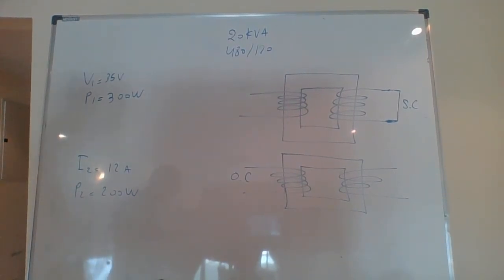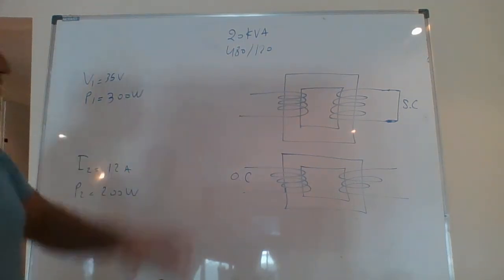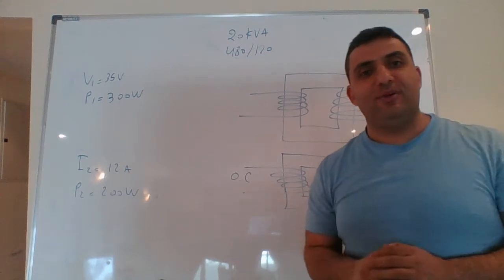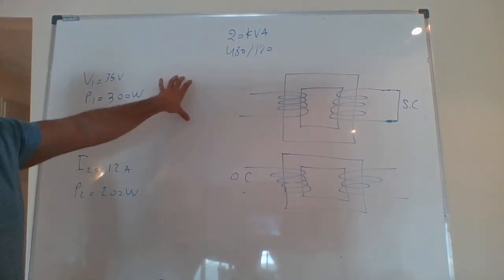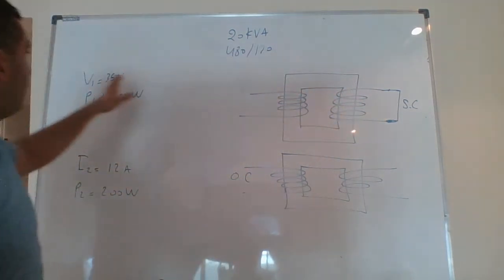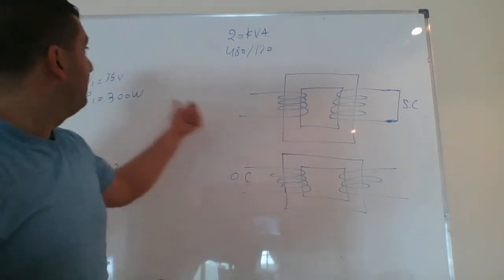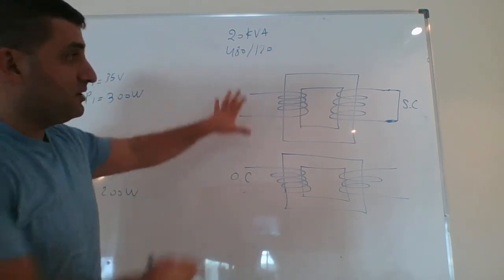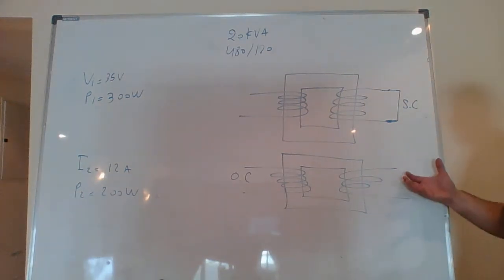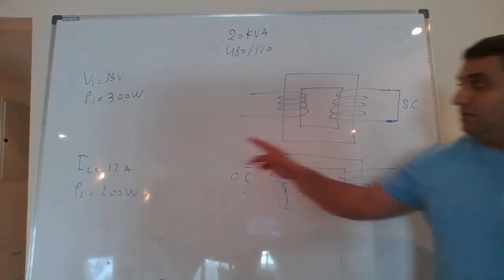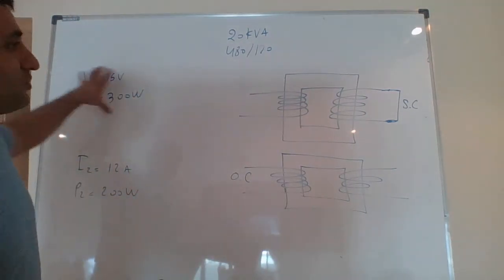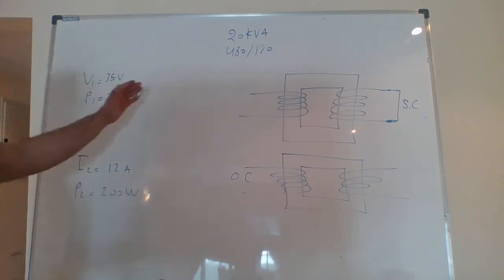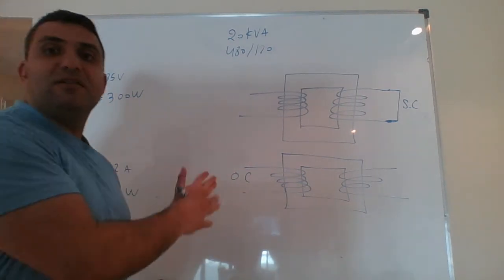The first question: from the short circuit test, determine the equivalent series impedance referred to winding one, neglecting the shunt admittance. I applied rated voltage, short-circuited the secondary, and measured V1 and P1. I then performed an open circuit test — applied voltage, left it open, and measured the input current and power. From the short circuit test I need to find Z of the transformer.